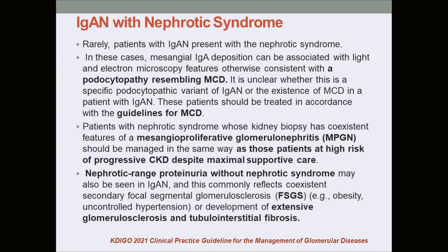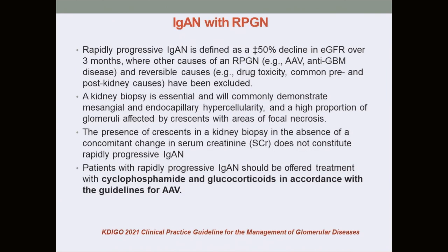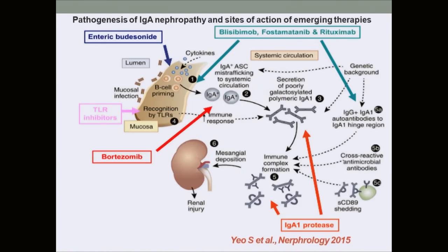In special situations like nephrotic syndrome, treatment depends on light microscopy features: if features resemble MCD, treat as MCD; if features show MPGN-like pattern, treat with high-dose prednisolone. If there is sub-nephrotic proteinuria without nephrotic syndrome, treat conservatively. In AKI without crescents, use supportive treatment; if crescents are present, treat as RPGN with cyclophosphamide or glucocorticoids.